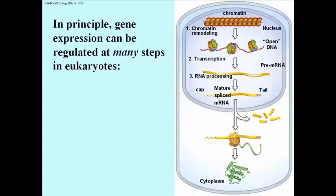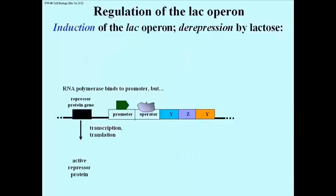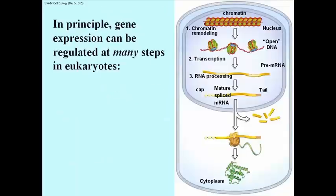The poly-A tail has something to do with the number of times that a message is actually translated by ribosomes. So if you could make shorter tails at a given time for a messenger RNA, you will end up making fewer polypeptides during the translation process. These are all just nuclear events, and then of course the message has to exit the nuclear pores and get into the cytoplasm — that's a step which in theory could also be regulated.